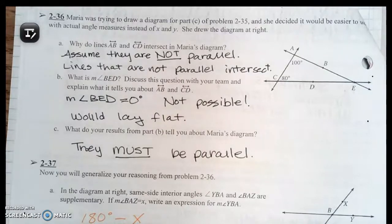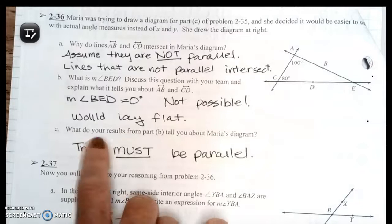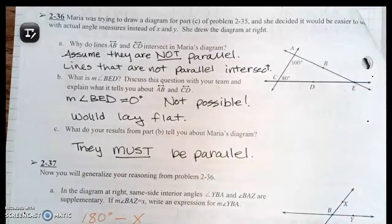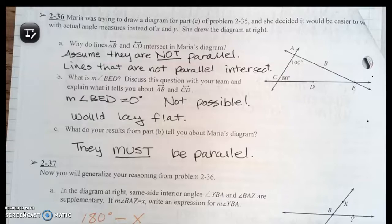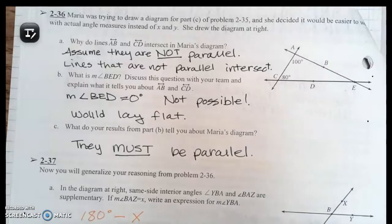Part C: what do your results from part B tell you about Maria's diagram? They must be parallel. Because we forced the opposite to happen, saying that they're not parallel, we proved by contradiction that they must be parallel.